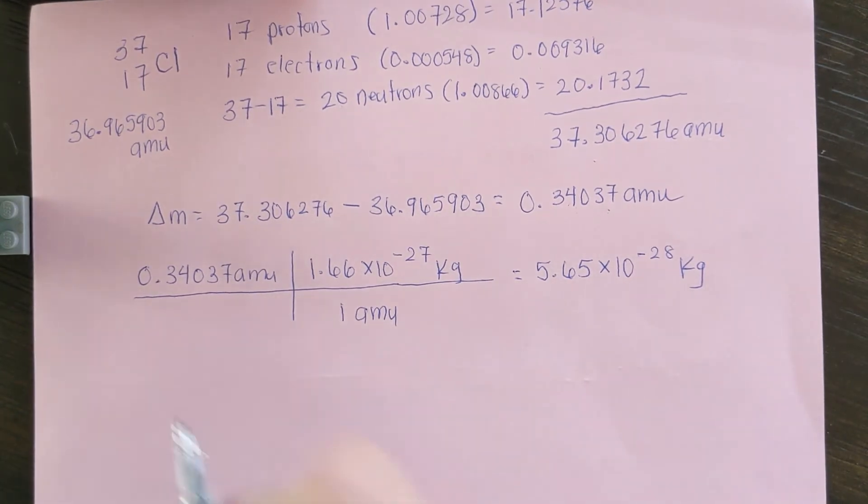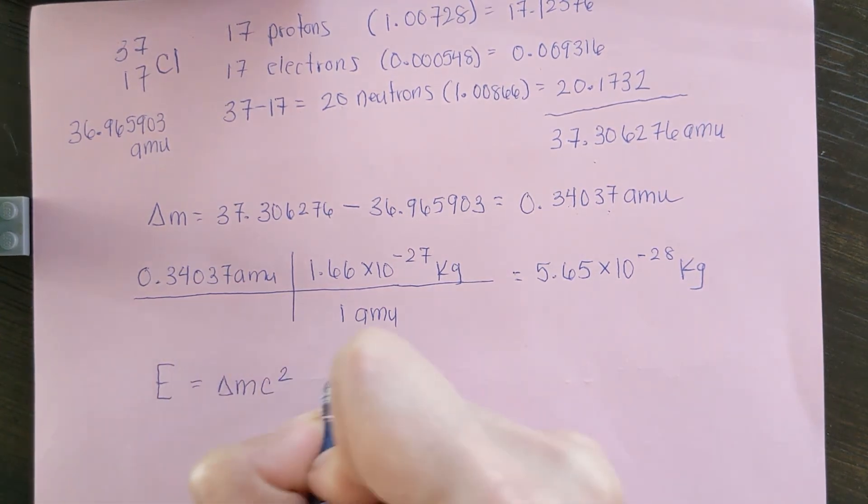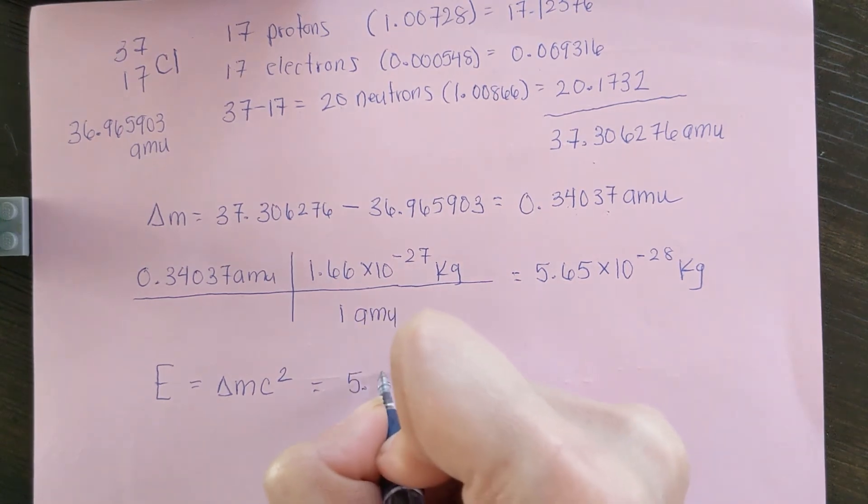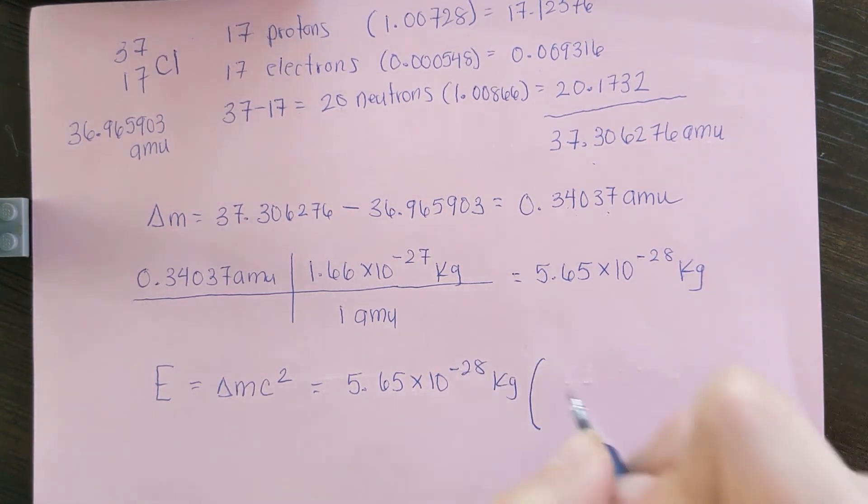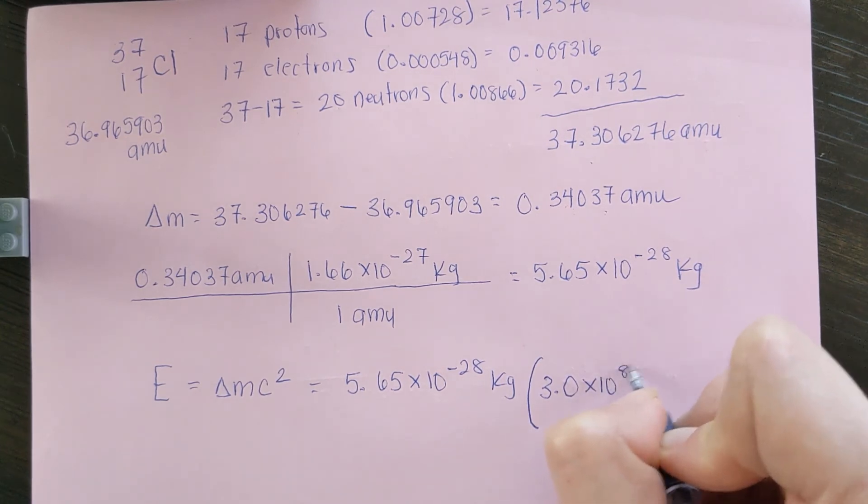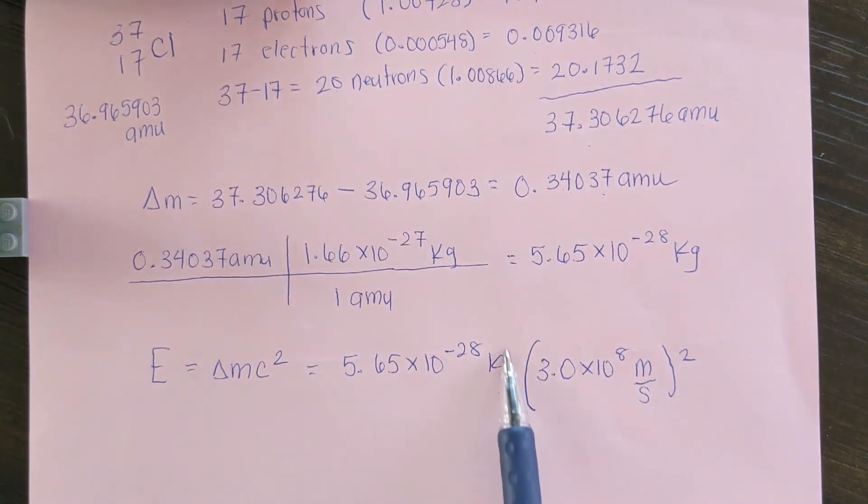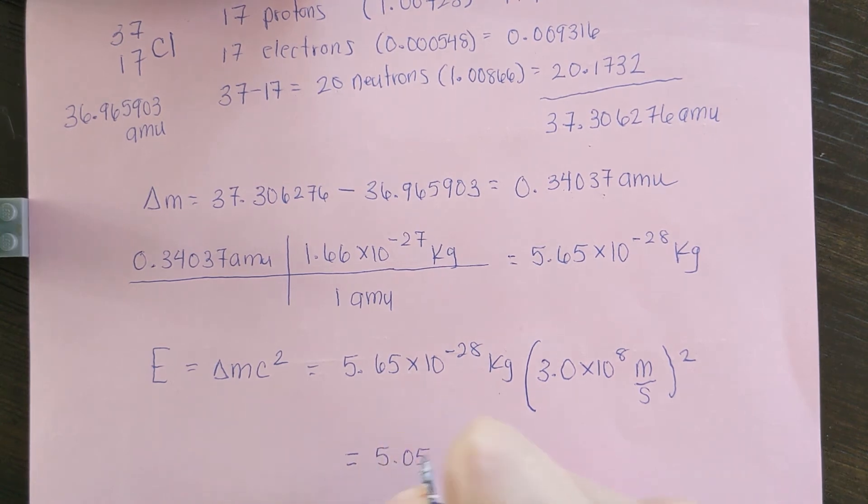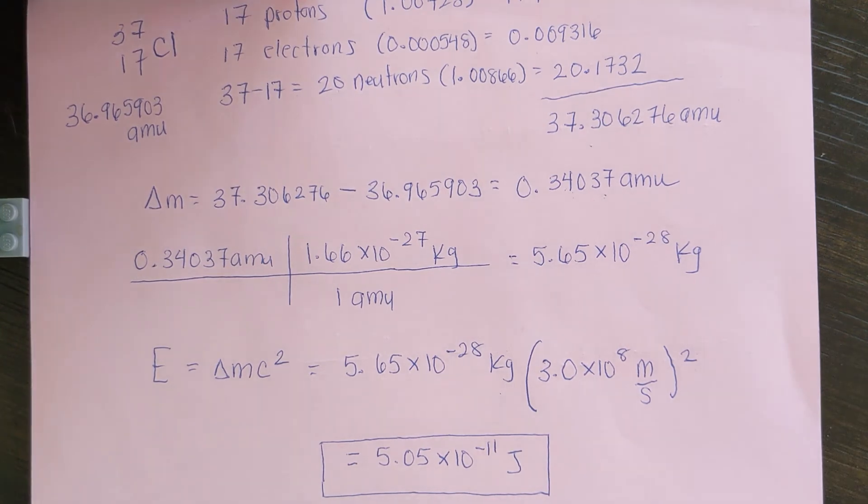So now to complete our problem here, E equals delta mc squared. So we have 5.65 times 10 to the minus 28 kilograms multiplied by c squared, which is 3.0 times 10 to the 8 meters per second, and that is squared. So now our units are kilograms meters squared per second squared, which gives us joules. So if we multiply through, we get 5.05 times 10 to the minus 11 joules. So this is the nuclear binding energy of our chlorine-37.